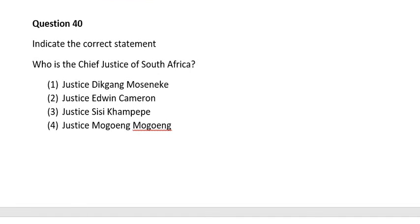Question forty. Indicate the correct statement. Who is the Chief Justice of South Africa? Number one, Justice Dikgang Moseneke; number two, Justice Edwin Cameron; number three, Justice Sisi Khampepe; number four, Justice Mogoeng Mogoeng. The correct answer is number four: Justice Mogoeng Mogoeng.